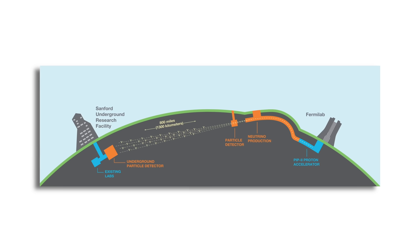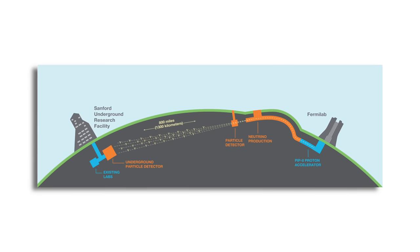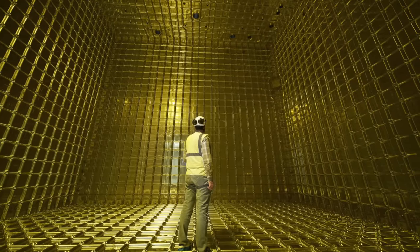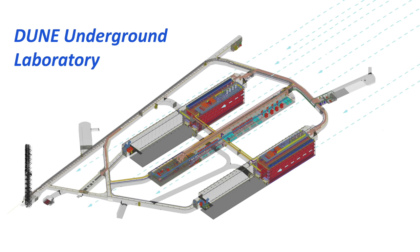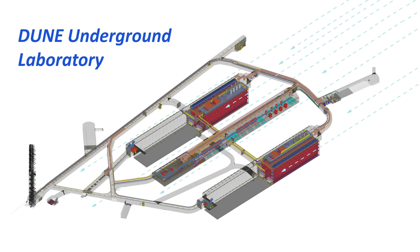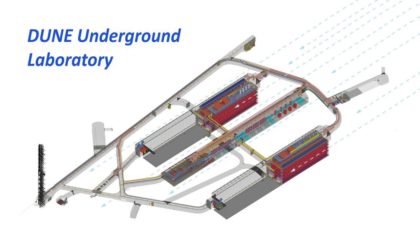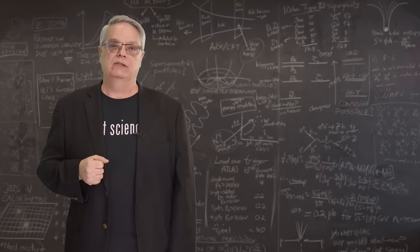However, the DUNE detector will be huge. When completed, it will comprise some 70,000 tons of liquid argon. While for technical reasons not all of that will be available for looking for proton decay, the DUNE detector represents some twenty to thirty thousand tons of useful protons. And with all those protons and such a super-sensitive detector, scientists will be keeping an eye out for proton decay.